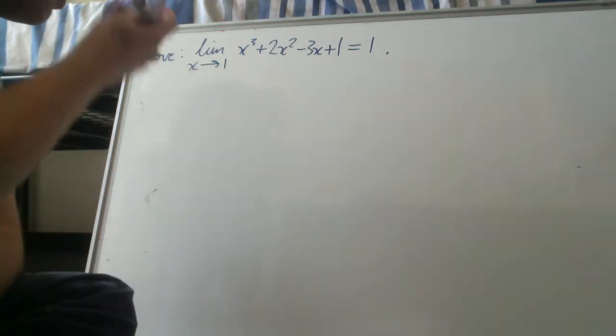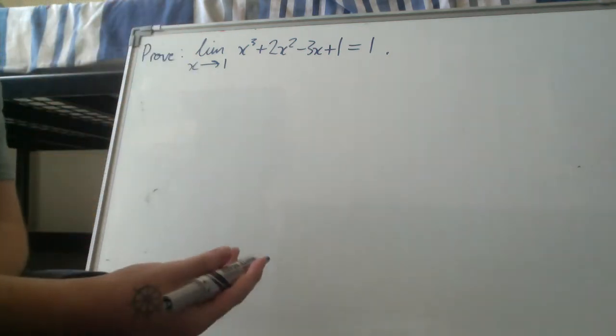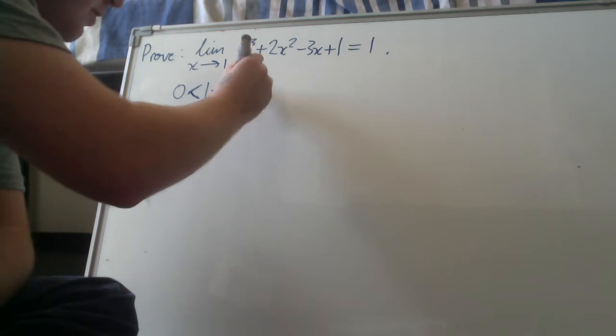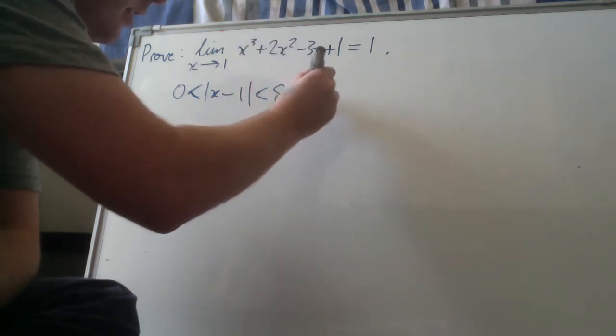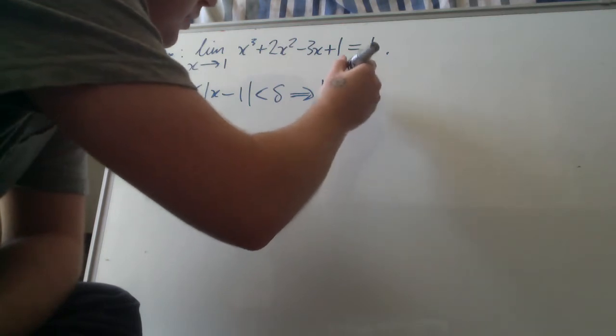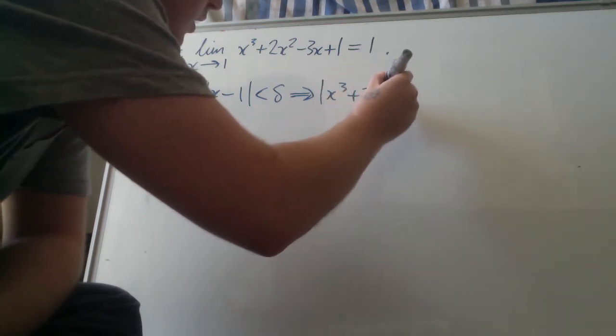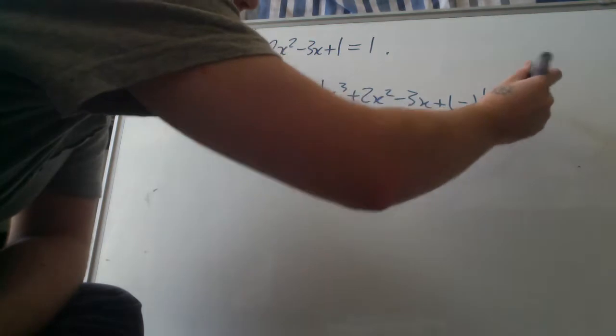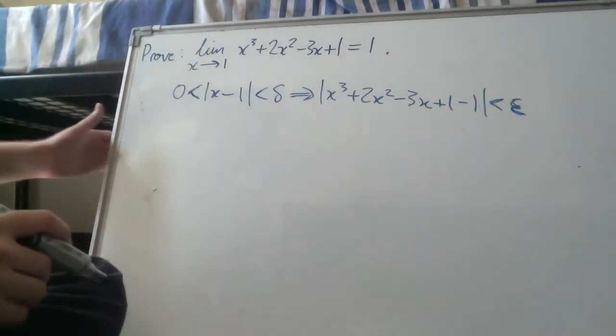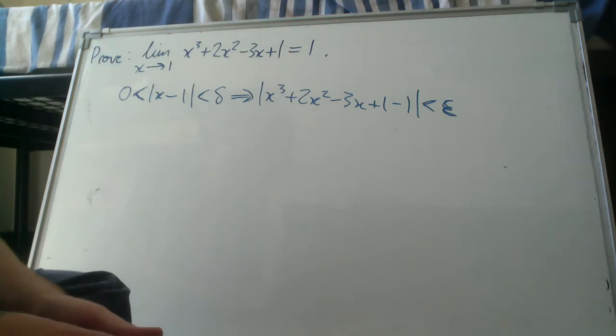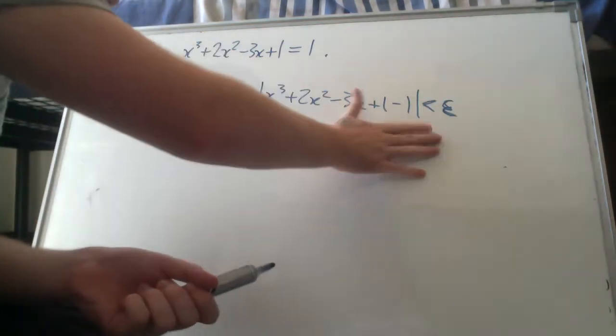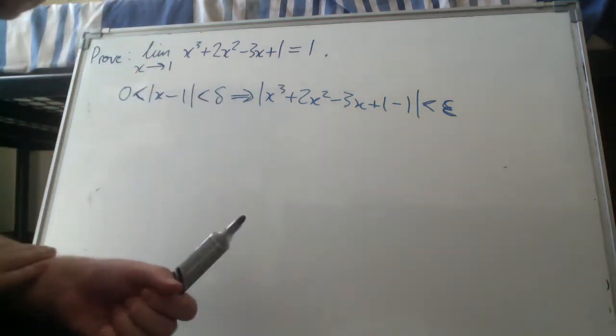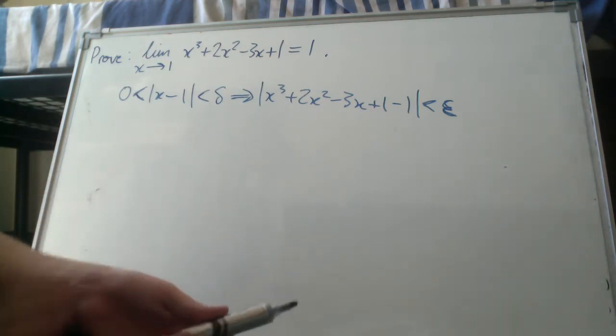Okay, so let's find epsilon. I'll write the implication again. So zero less than x minus what x tends to, one, less than delta, implies absolute value of the function minus the limit less than epsilon. Okay, so again we're going to start with the right-hand side, the consequent, and manipulate it so that it looks like the left-hand side, the antecedent.